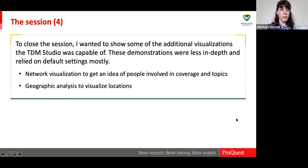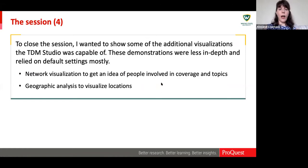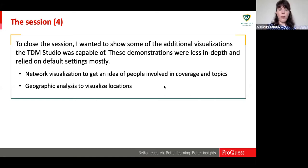To close the session I showed additional visualizations TDM Studio was capable of — the demonstrations relied on default settings but the network visualization shows people, places, and organizations mentioned often in the corpus and in individual topics. Geographic analysis to visualize location is another really powerful digital humanities tool that can make clear things not obvious to scholars doing close readings of text.